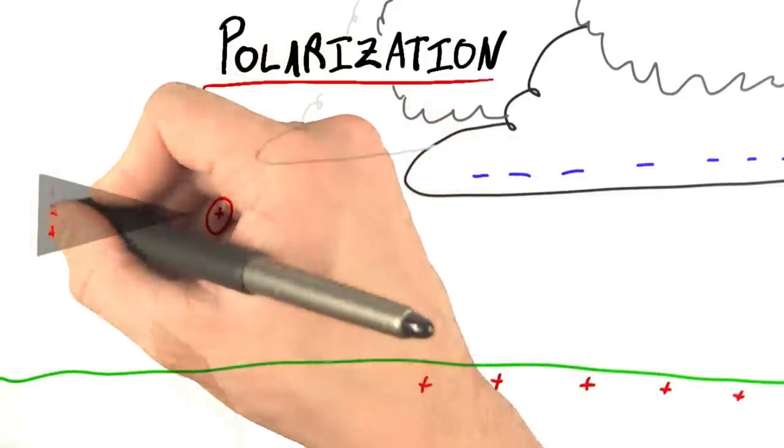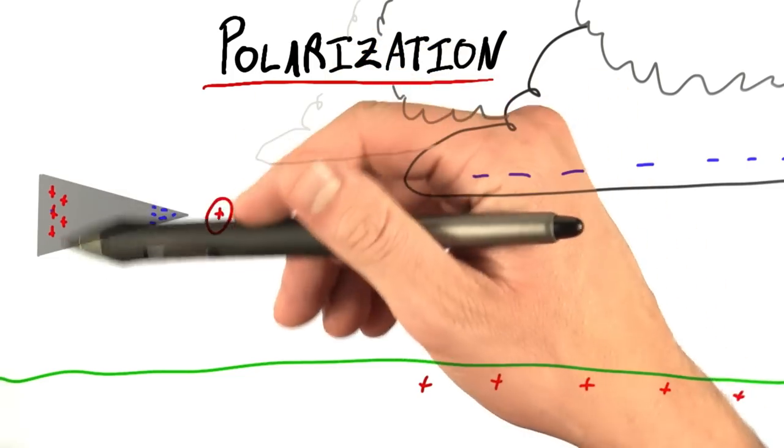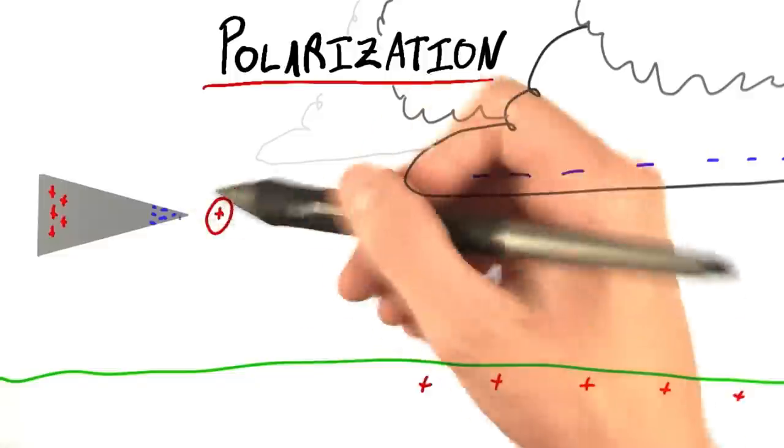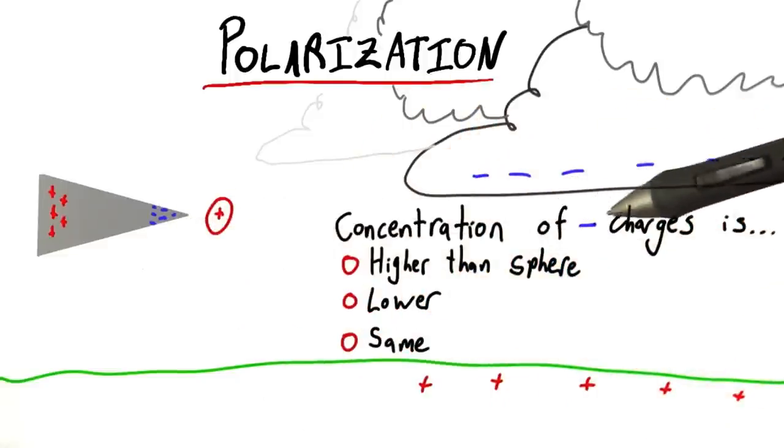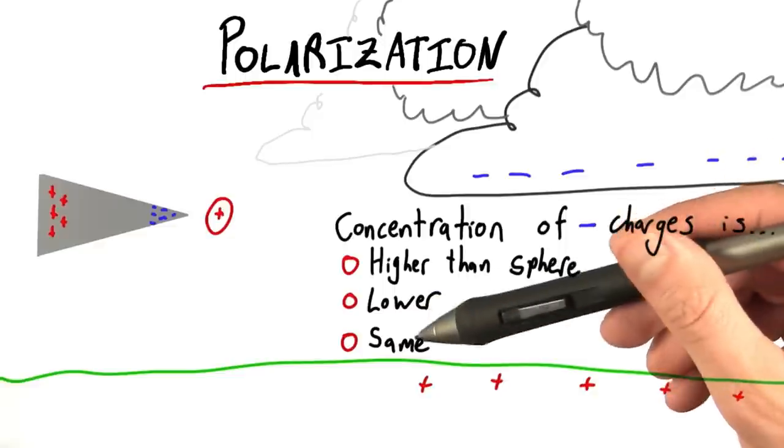I still expect polarization to happen. But qualitatively, is there any real difference between what happened with the sphere and what happened with the cone? At the tip of this cone, is the concentration or density of negative charges higher than it was with the sphere, lower or the same?